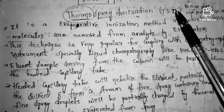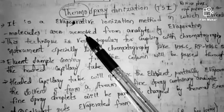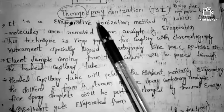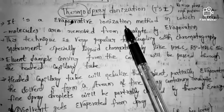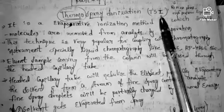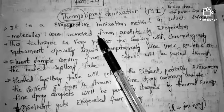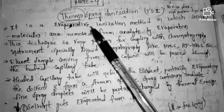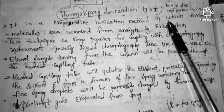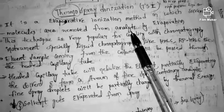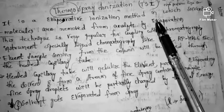Thermospray ionization is an evaporative ionization method. Here, in order for evaporation to occur, thermal conditions are used. In this technique, solvent molecules are removed from the analyte by evaporation.